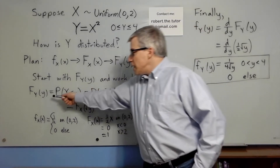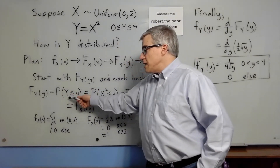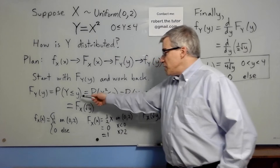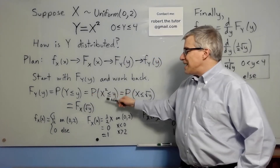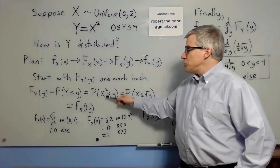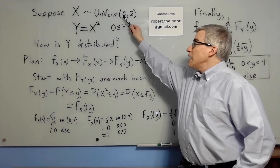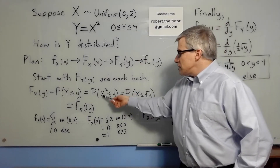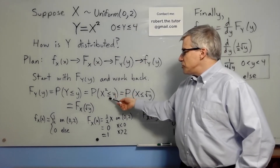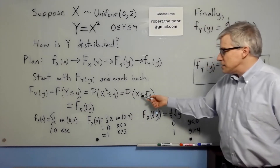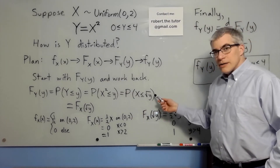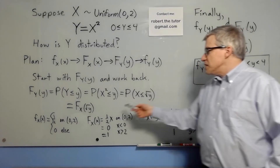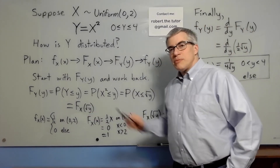The CDF of y is the probability that big Y is less than or equal to little y. But big Y is x squared. I deliberately chose an easy example where x is positive. So if x squared is less than or equal to y, that means x is less than or equal to the square root of y. That probability is the CDF with square root of y plugged in.